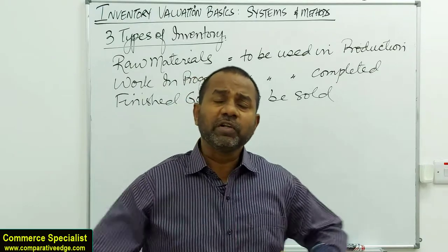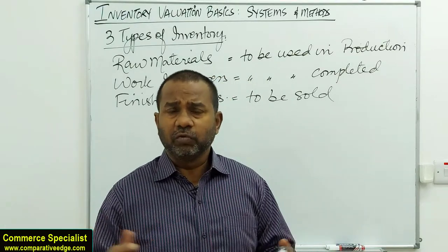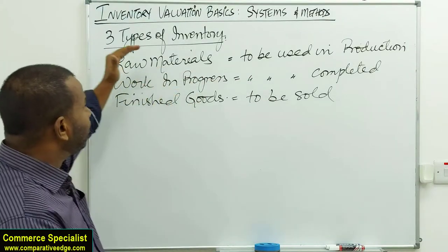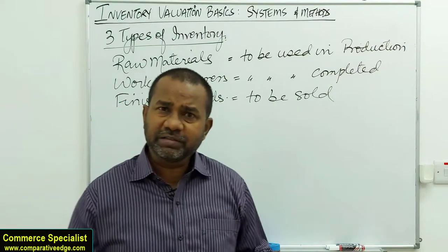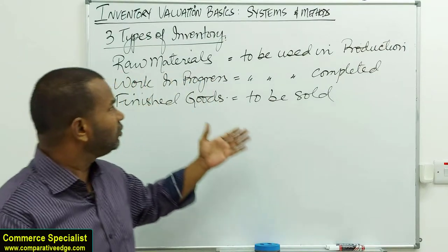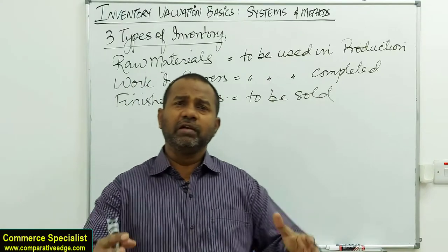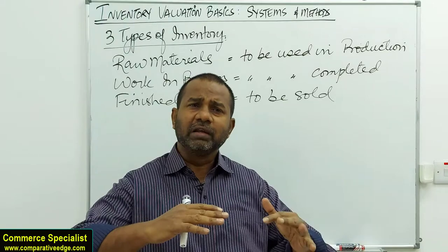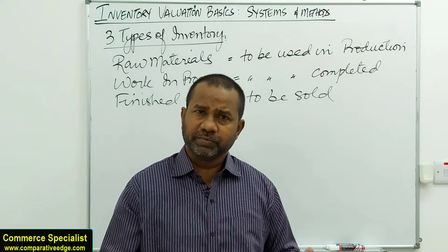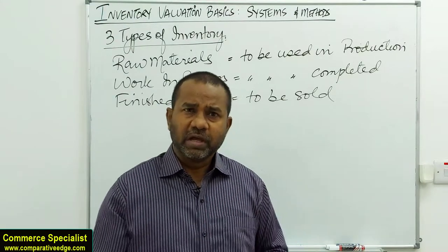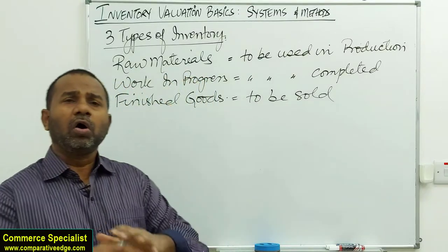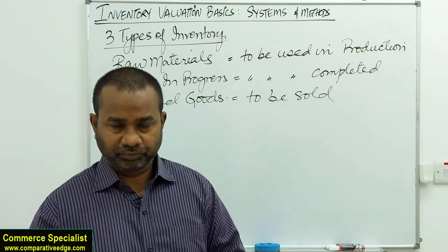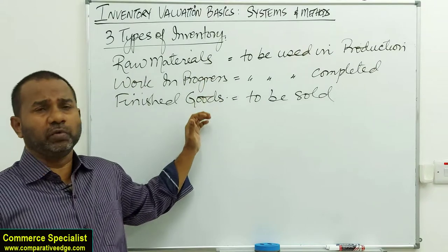For example, a furniture manufacturing company would ideally have three different warehouses. In the first warehouse you find raw material — wood, wooden planks. The second warehouse has work in progress — tables and chairs in semi-finished form. In the third warehouse you find all finished products ready to be sold.